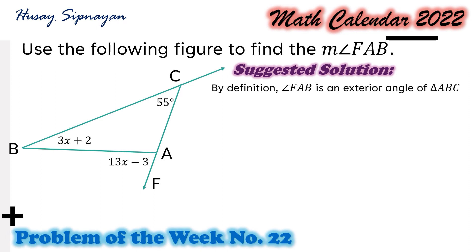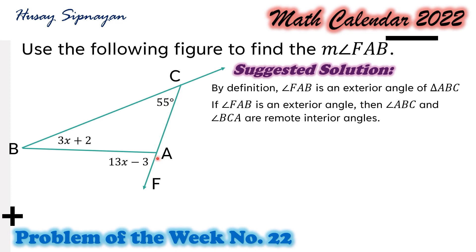By definition, angle FAB is an exterior angle of triangle ABC. Now, if angle FAB is an exterior angle, then angles ABC and BCA are its two remote interior angles. And by the Exterior Angle Theorem, this states that the measure of an exterior angle of a triangle is equal to the sum of the measures of its two remote interior angles.